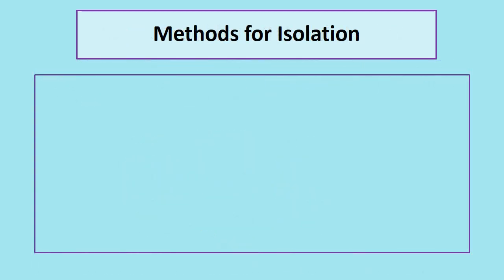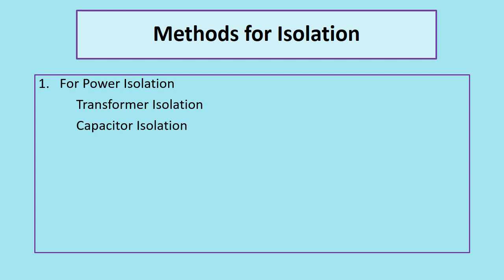There are two methods for isolation depending on the application. For power isolation, there are two methods: transformer isolation and capacitor isolation. For signal isolation, there are again two methods: optical isolation and Hall effect isolation.